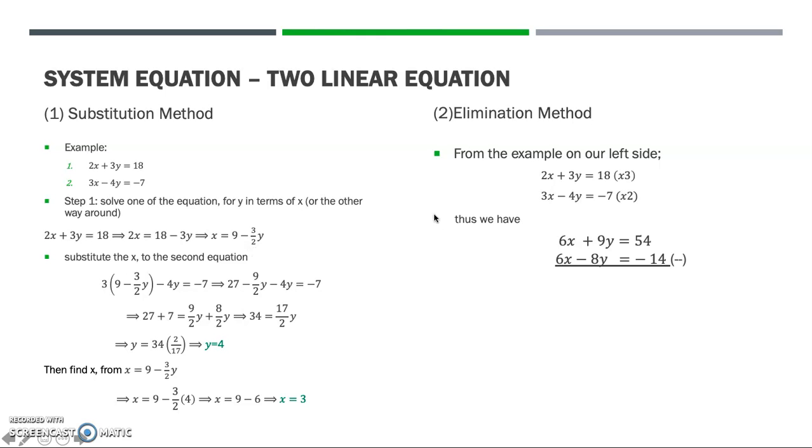Here I want to eliminate the x. So I make both x to be equal to 6 by doing cross multiplication.